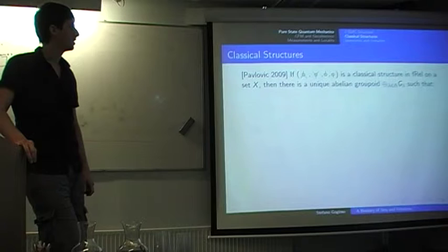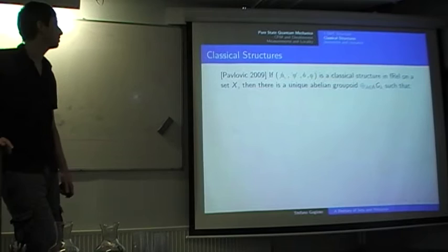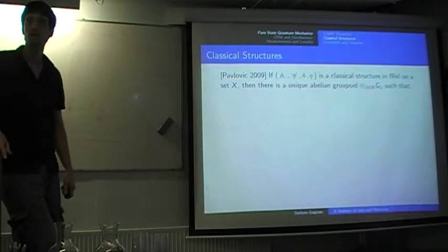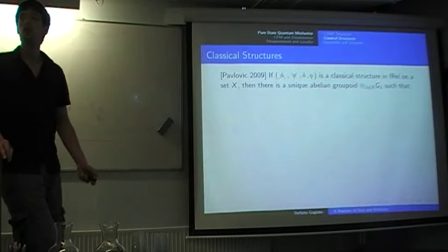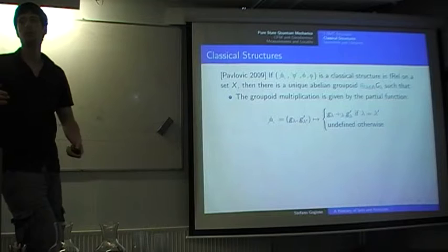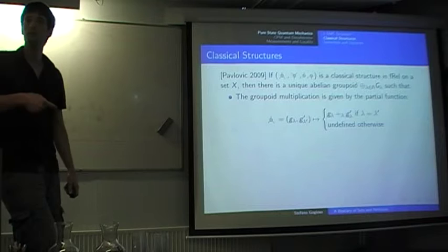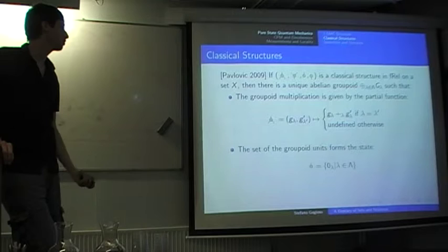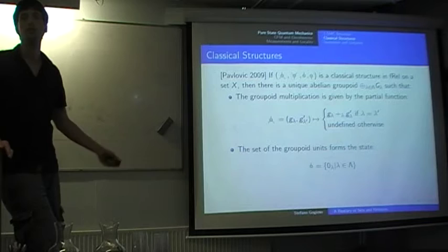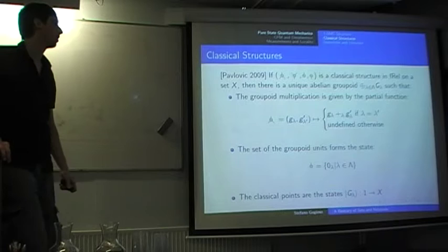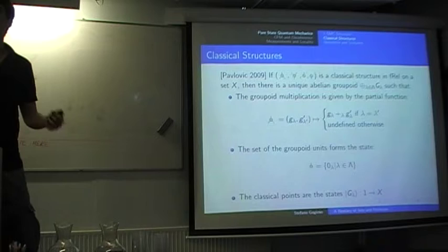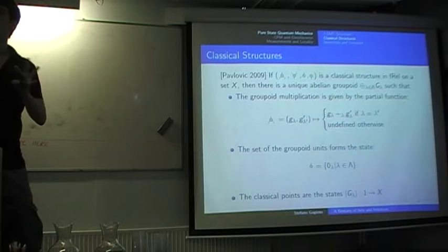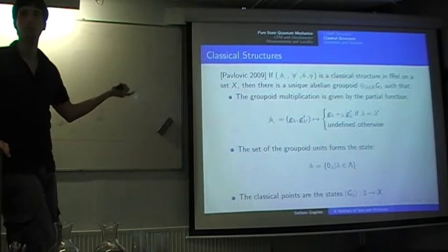We have a categorization of classical structures by Rucho Pavlovich, done in terms of abelian groupoids. You can think of abelian groupoids as a partition of the set into subsets G lambda which are disjoint and their union forms the entire set, which come with an abelian group structure on each. The partial function gives the multiplication of the classical structure, and the set of units, all the zeros of the abelian groups, gives you the unit of the classical structure. The classical points are conveniently exactly the groups that form the groupoid, because if you try to multiply elements from them you just get zero unless you multiply elements from the same one. They're matched and obviously also duplicated.